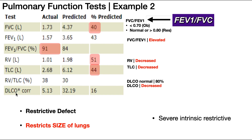Down here is something called the DLCO — the diffusion capacity of carbon monoxide. Carbon monoxide diffuses from the alveolus across the capillary interface into the blood passively, just like oxygen and carbon dioxide also diffuse passively. So if the diffusion of carbon monoxide is high, that probably means diffusion of oxygen and CO2 are also high, and vice versa — if it's impaired, then oxygen and CO2 will also be impaired. We can use this value to determine if gas exchange across the alveolar-capillary interface is good or not.